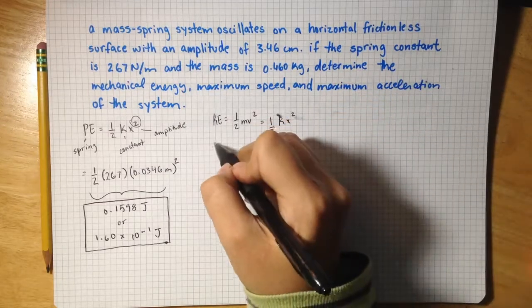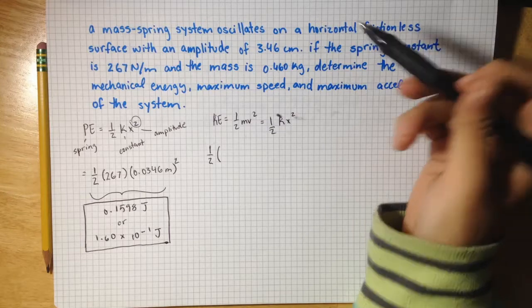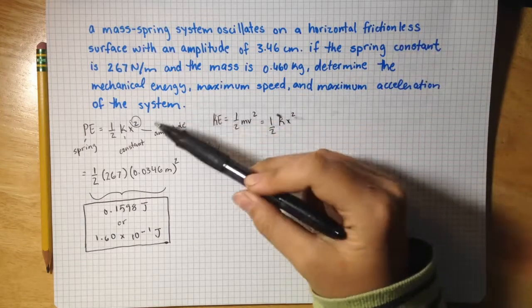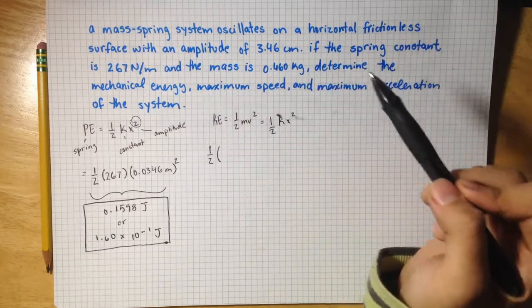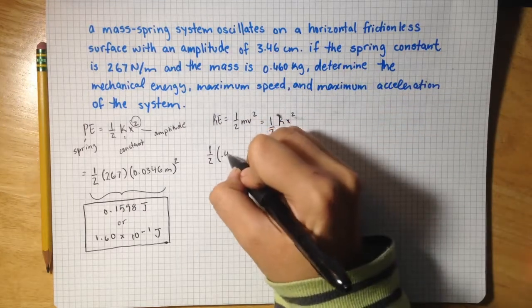So one-half, I'm going to plug the numbers in from what they gave us. For kinetic energy, one-half, the mass of the spring is 0.46 kilograms.